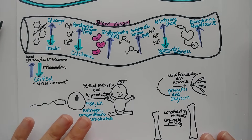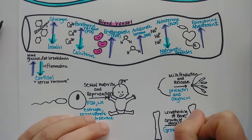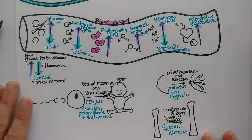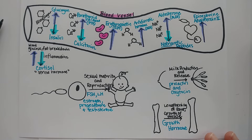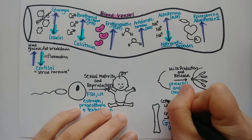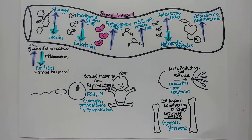The last hormone to discuss is growth hormone. Growth hormone is important for helping kids grow — their bones get longer and their muscles get stronger. But throughout our life, even once we've reached adult size, cell repair, muscle maintenance, and similar functions are all stimulated by growth hormone.